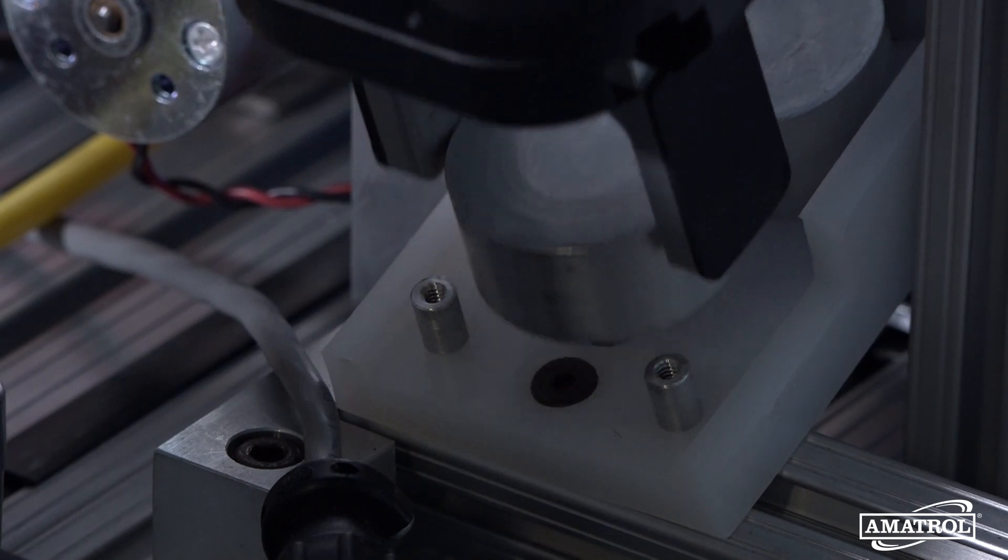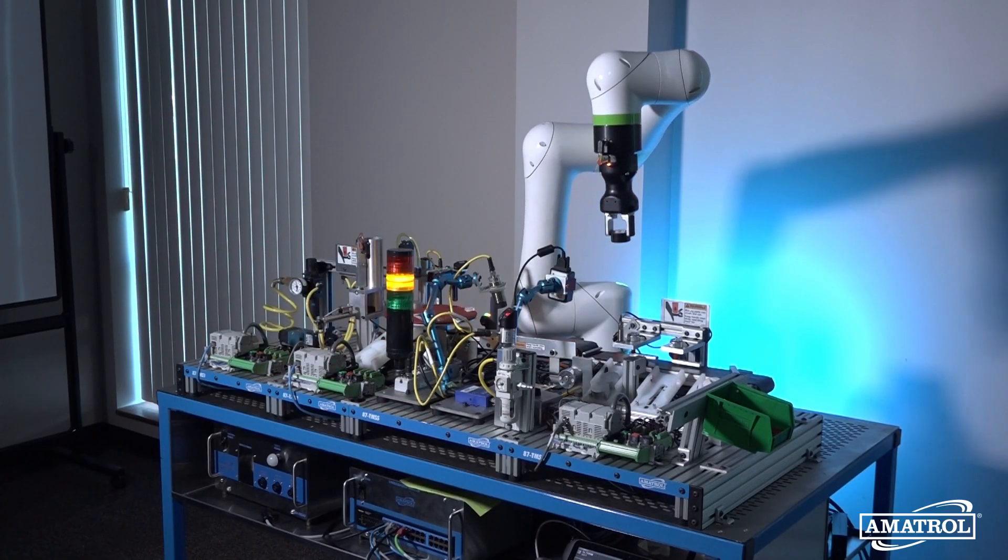For increased safety, Amitrol also added a force-sensing gripper to the FANUC COBOT. This special gripper allows for safe picking.